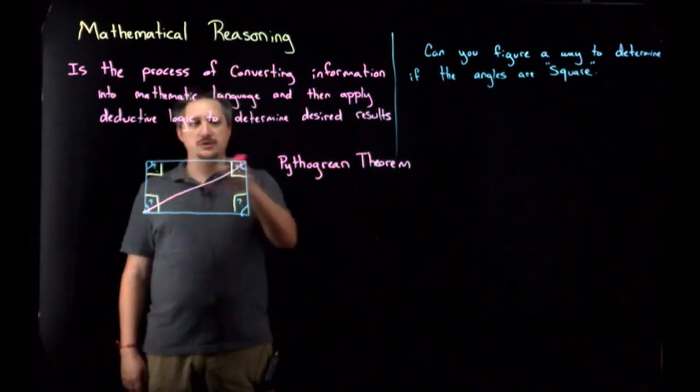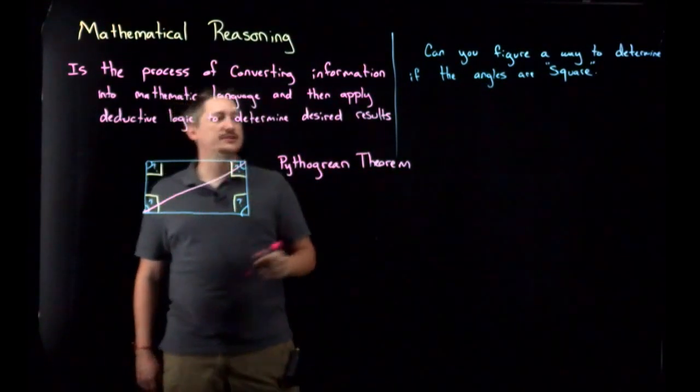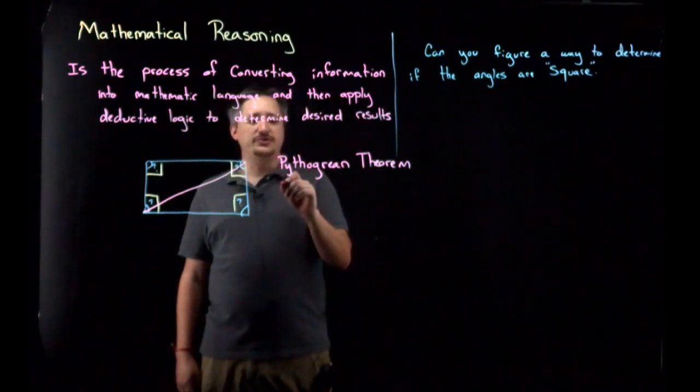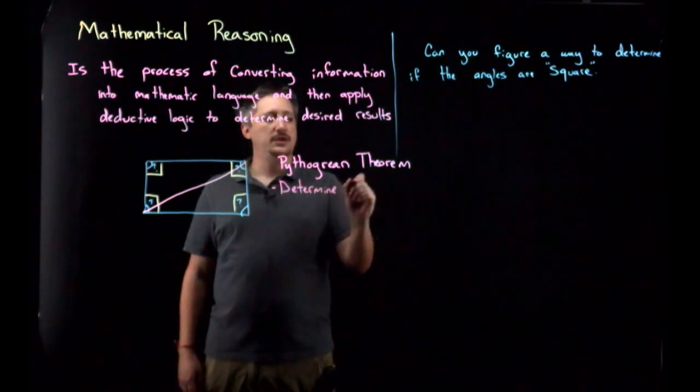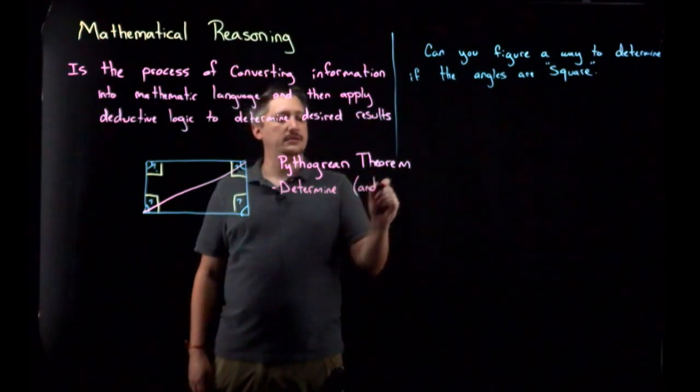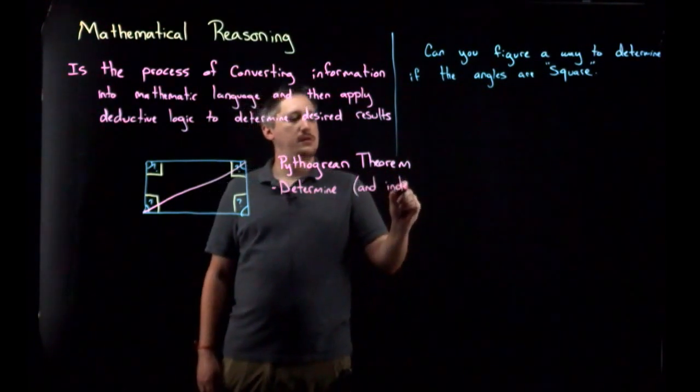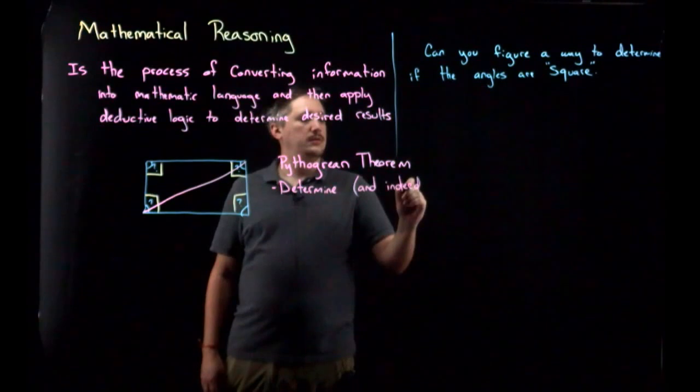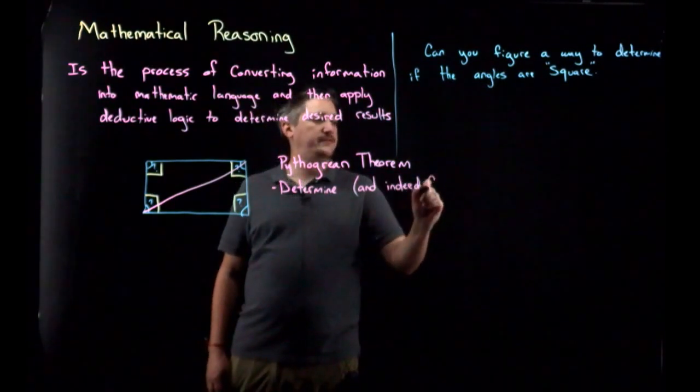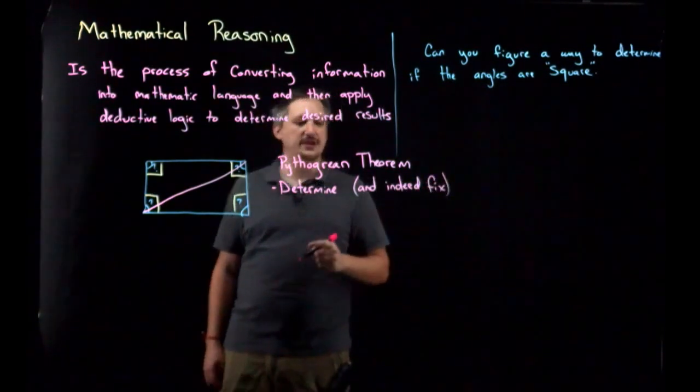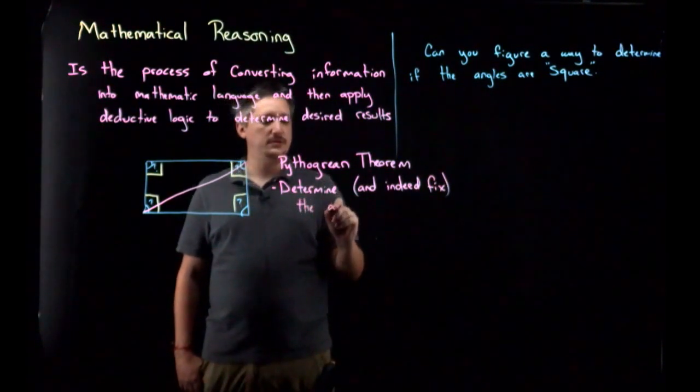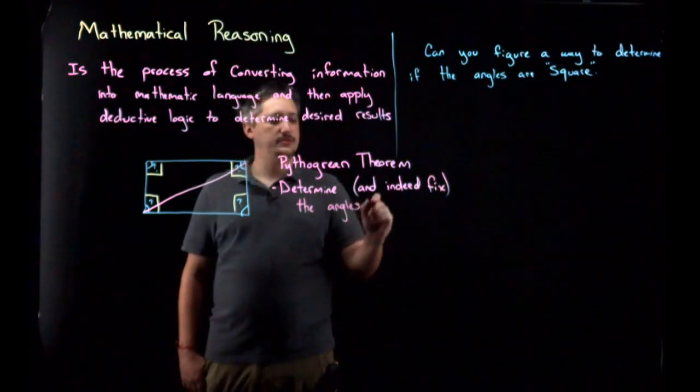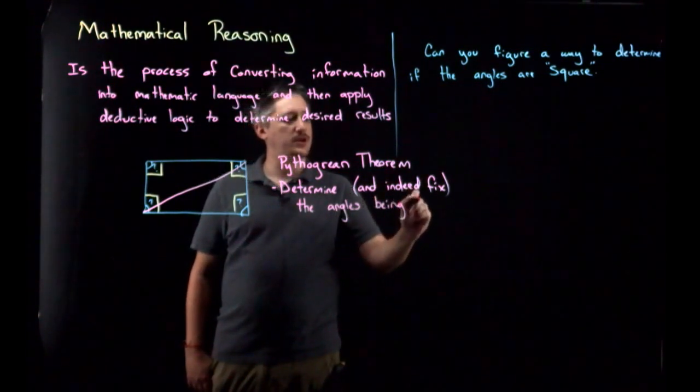And using this with some geometry, I concluded that if I could tell exactly what this length was, right—so if I knew what these lengths and that length was—I could determine, and indeed fix if it wasn't the case, the angles being square.